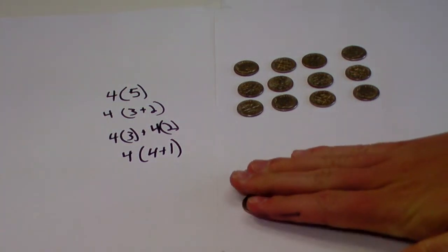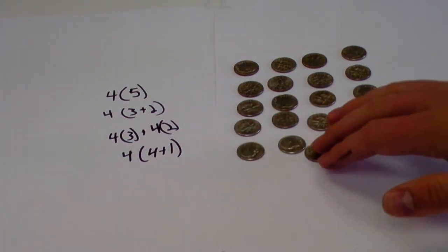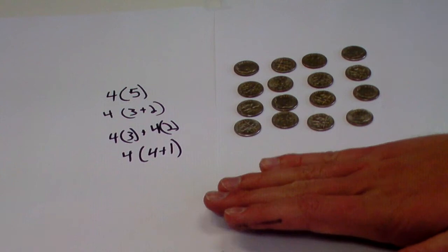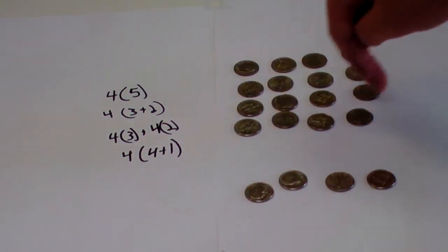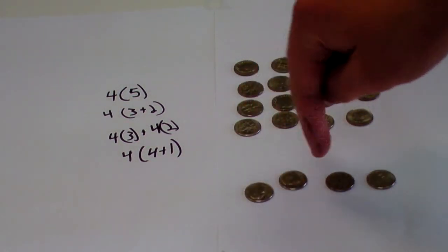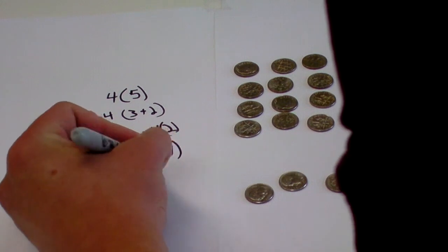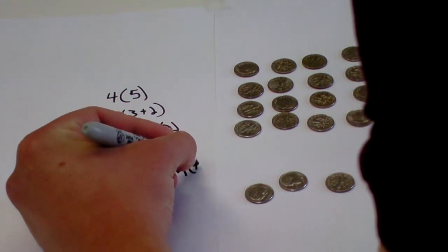Let's see if I can use my distributive property here again. I've got 4 times 4 plus 1, or 5, and that can be rewritten as 4 times 4 plus 4 times 1. So I've got 4 down here and then 16 up here. It's exactly the same thing. So 4 times 4 plus 4 times 1.